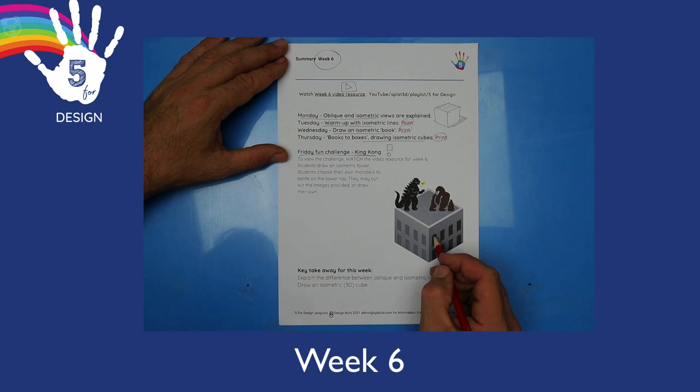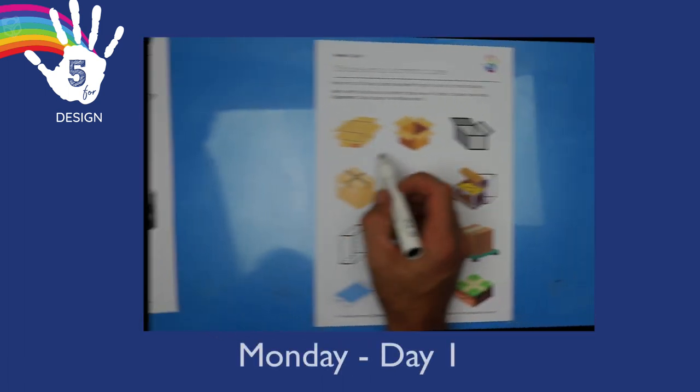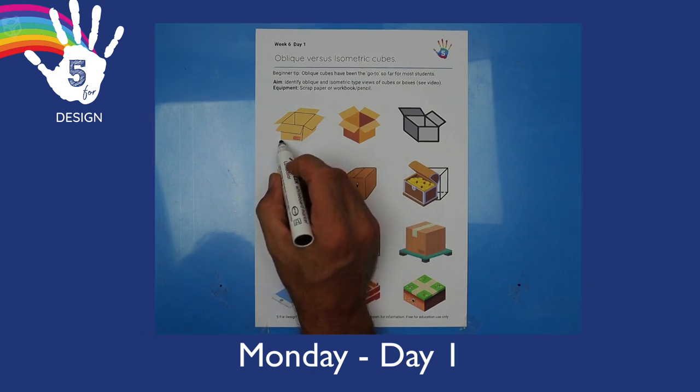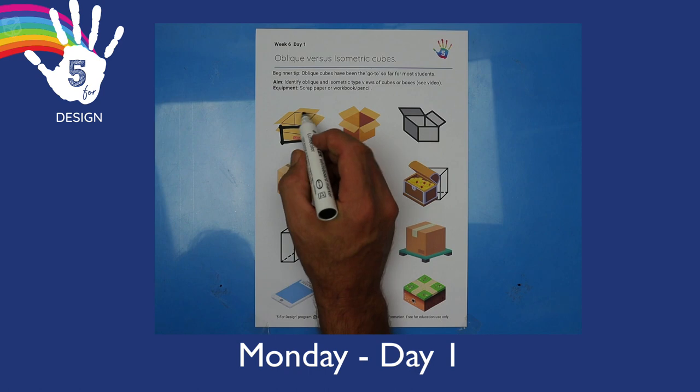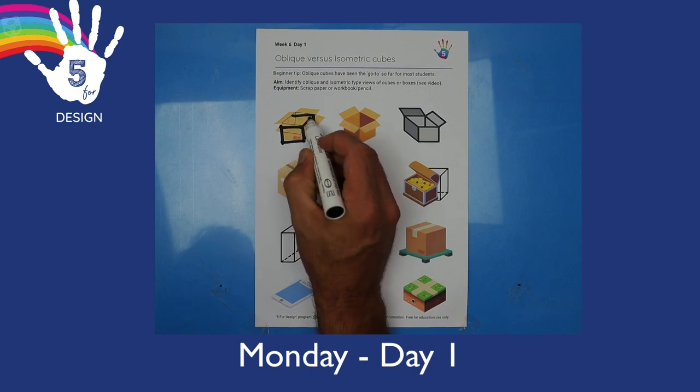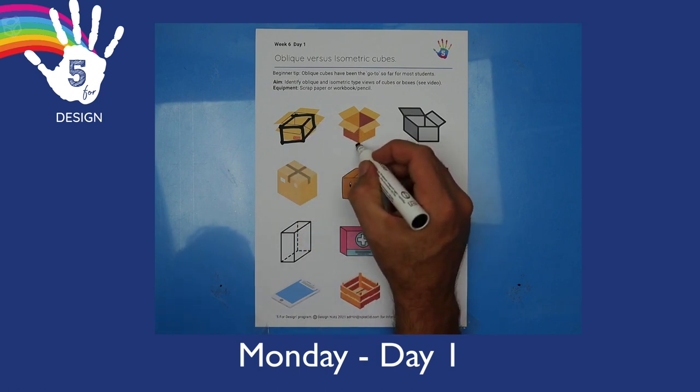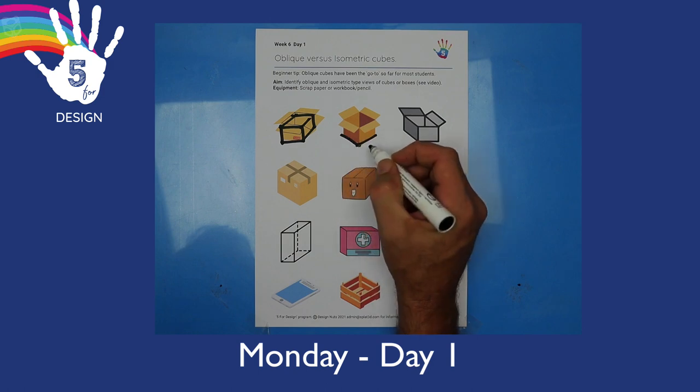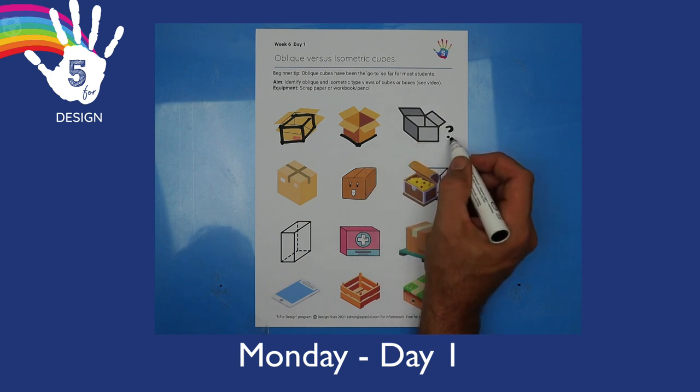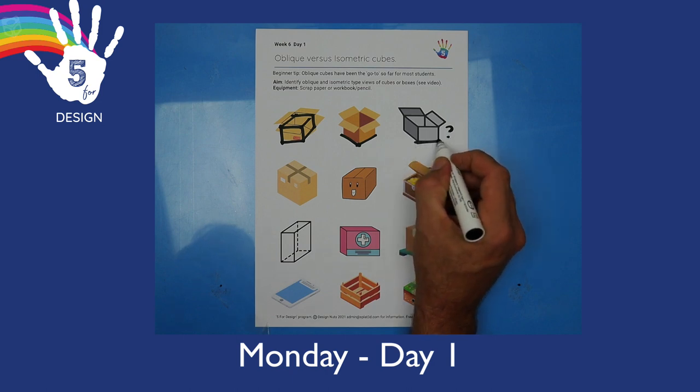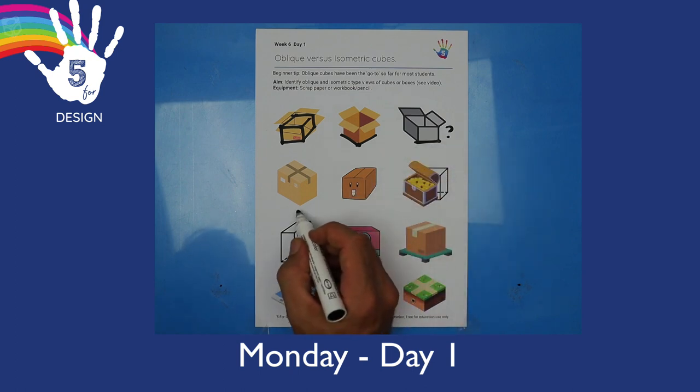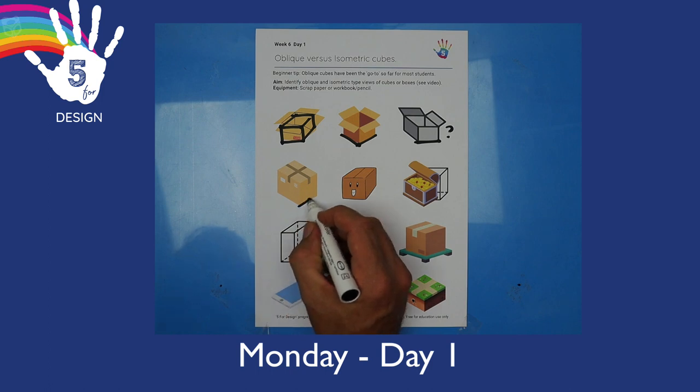Friday Fun Challenge is creating a massive tower and then placing some characters on top. You can draw them, or you can use the ones, the cutouts that I'll supply you. Notice how this box has its end almost straight onto us, or what's called oblique, and then one side only slopes away. On this box, the corner is closest to us, and both sides are sloping away. And that's what makes this box an isometric box.